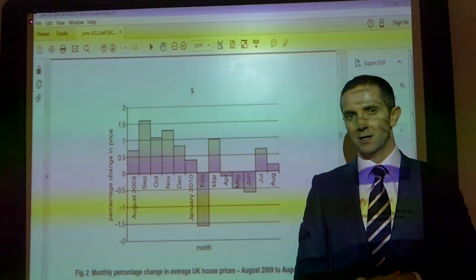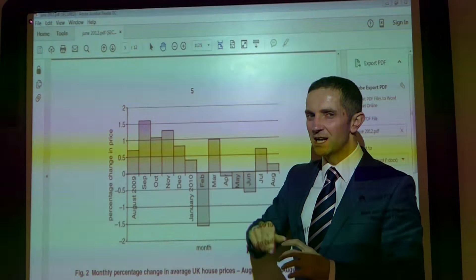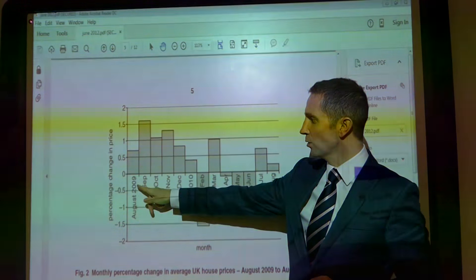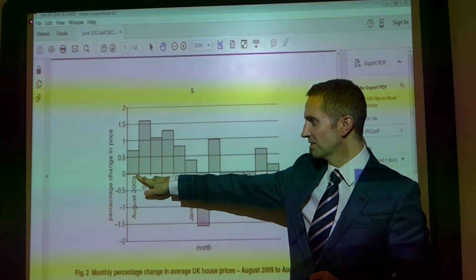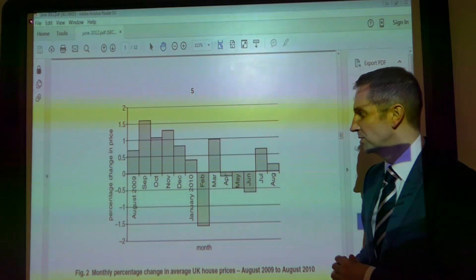And part of the question says please tell us what is happening to house prices over the duration of the time period shown. Now this is percentage change in price. So in August, for example, August 2009,